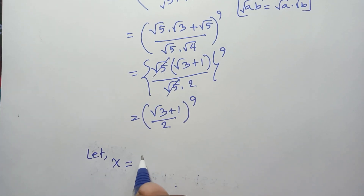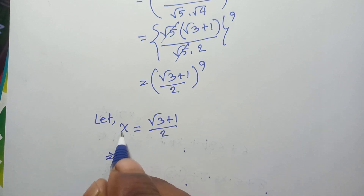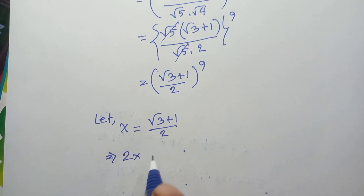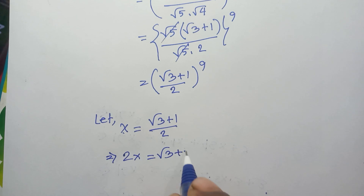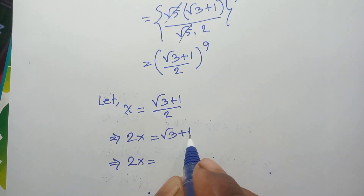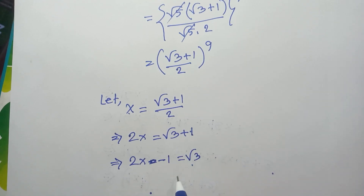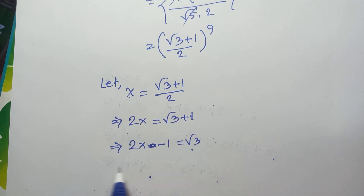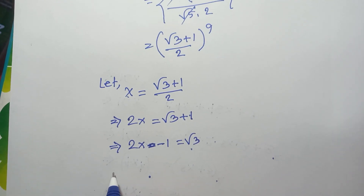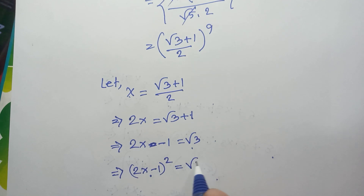Let x = (√3 + 1) / 2. We cross multiply to get 2x = √3 + 1, then move 1 to the left side: 2x − 1 = √3. Now we will square both sides.